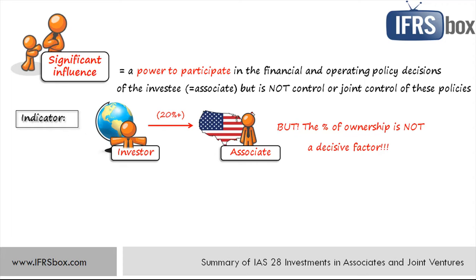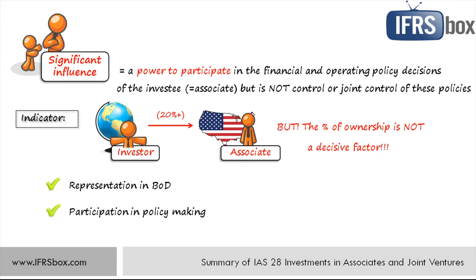What is the evidence of significant influence? There are more things to watch out for. For example, an investor has representation on the board of directors or any similar managing body. Or, the investor participates in policymaking processes, including decisions about dividends. Or, there is interchange of managerial personnel between the investor and the investee. Or, there could be some material transaction between the two, or the provision of significant technical information — just a few ways significant influence can be evidenced.